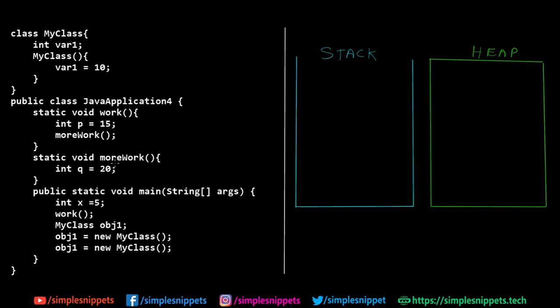When you start to execute this program, the starting point is the main method. In Java, when programs are executing, methods are added into the stack memory. Your program is basically running in RAM — that's your main memory — and in the RAM we have two different types of memory: the stack and the heap. The JVM uses both depending upon what is being used in the program. Methods are usually allocated on the stack.